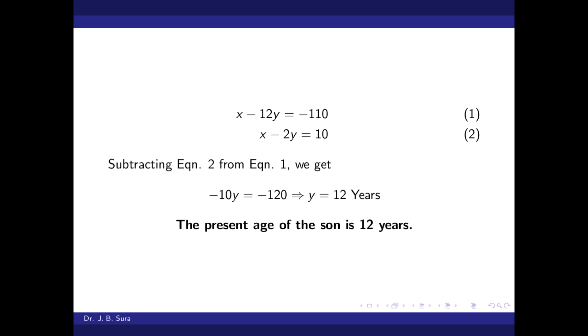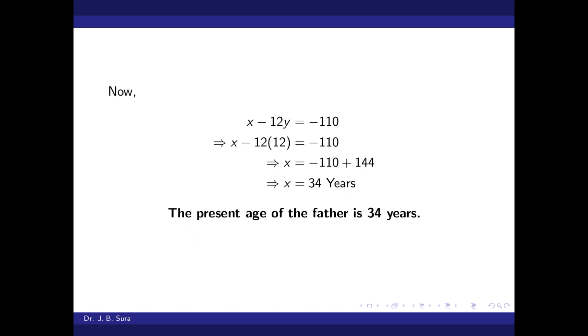Now, we will use this information to find out father's age. x minus 12y is equal to minus 110 that we have derived. We will put the value of y, which is 12. x minus 12 into 12 is equal to minus 110. Therefore, x is equal to 34 years. So, the present age of the father is 34 years.